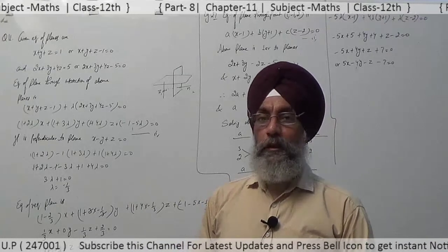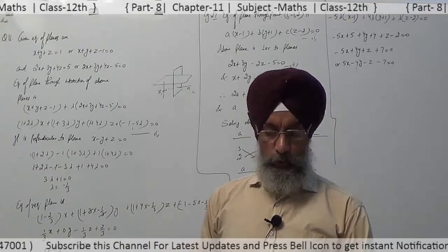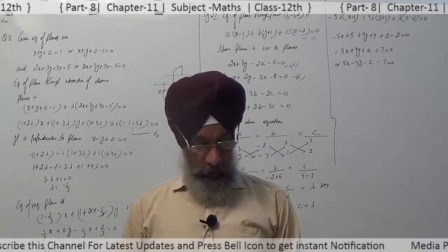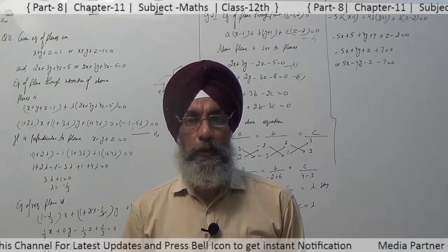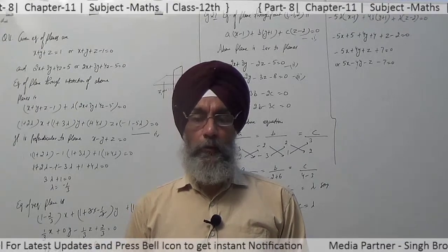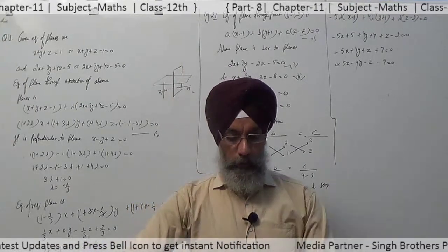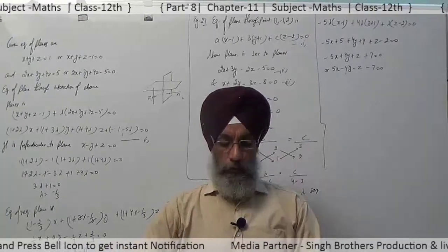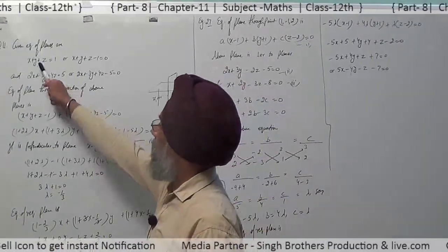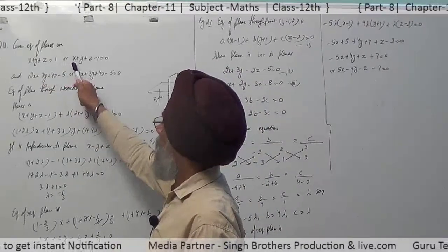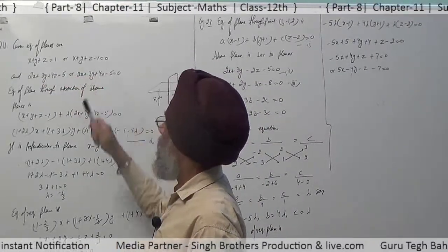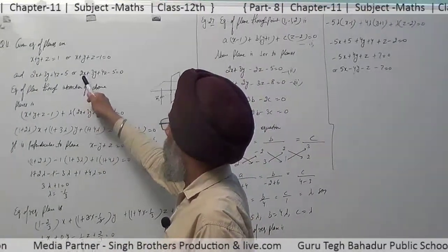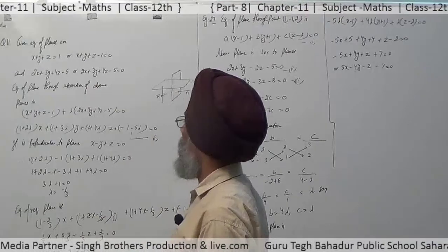See question number 11 of exercise 11.3. The question says: find the equation of the plane through the intersection of the planes x + y + z = 1 and 2x + 3y + 4z = 5, which is perpendicular to the plane x - y + z = 0. The given planes are x + y + z - 1 = 0 and 2x + 3y + 4z - 5 = 0.